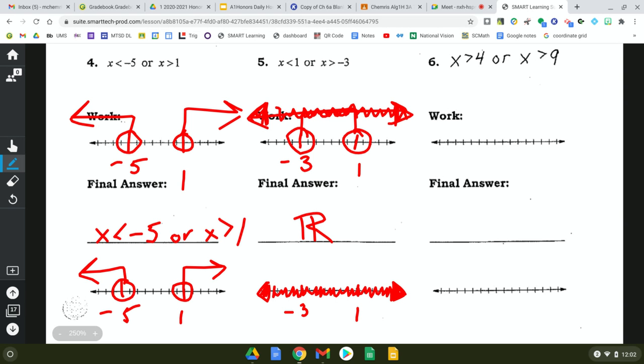Now, the next one says x is greater than 4 and x is greater than 9. That's greater than 4. That's greater than 9. Now, if this was an and, we would just include where they overlapped. But, we know or is more. Or is more.